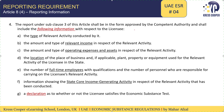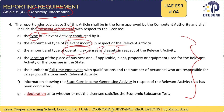For the reporting requirement, the following information is required to be provided in the return. We have already discussed the economic substance test requirement — the three tests: functional test, management test, and adequacy test — and the objective of the return is to prove that all those tests have been met. Information required includes: type of relevant activities conducted, relevant income earned, operating expenditure, operating assets, location, business premises, full-time employees, and core income generating activities (CIGA).